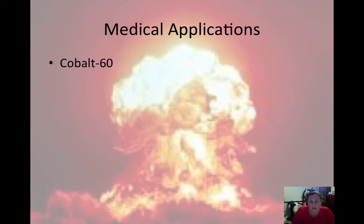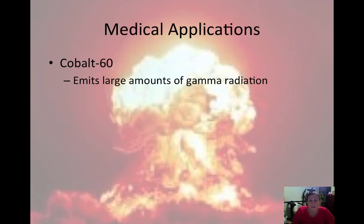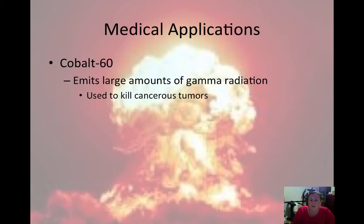Cobalt-60 emits large amounts of gamma radiation. Gamma radiation is very penetrating and has no mass and no charge. It is used to kill cancerous tumors, so while it can be very dangerous, it is also used to destroy tumors.